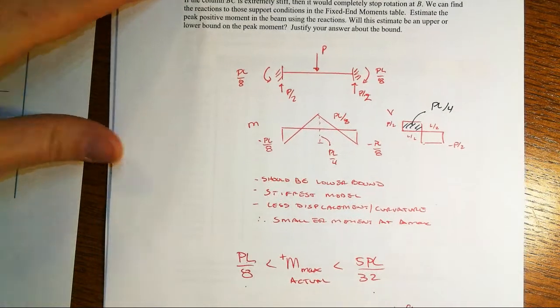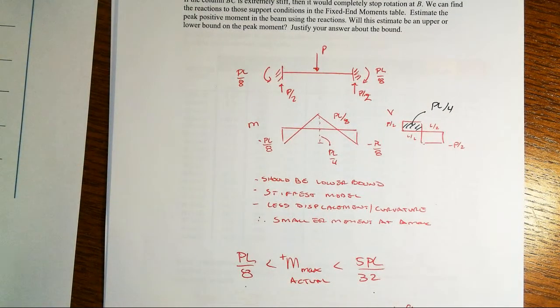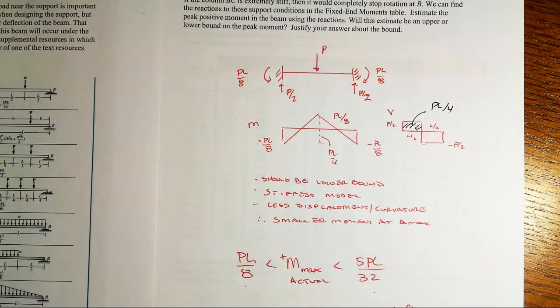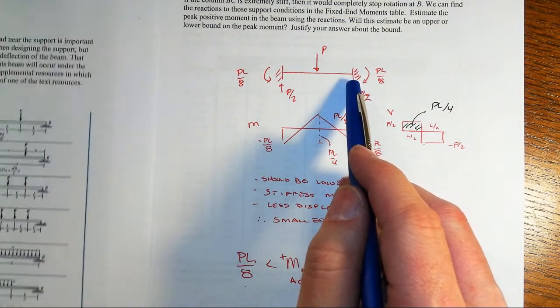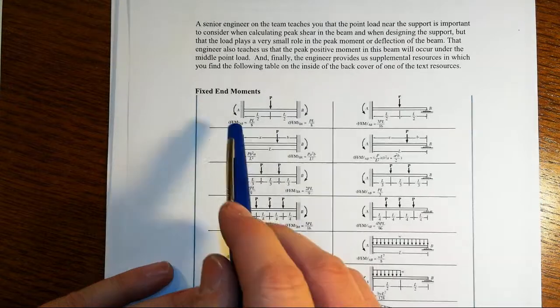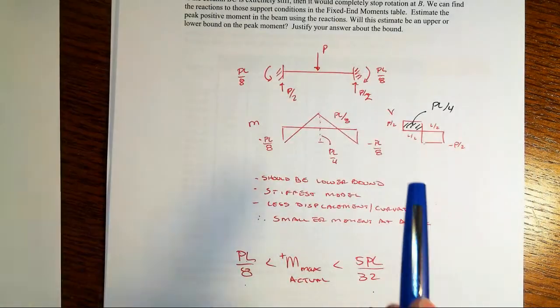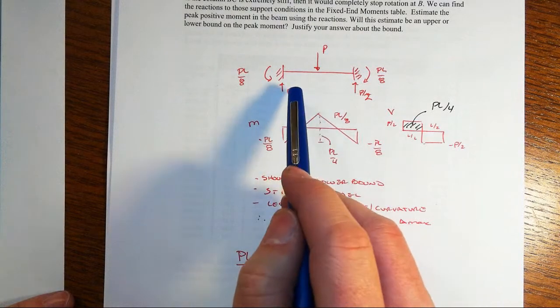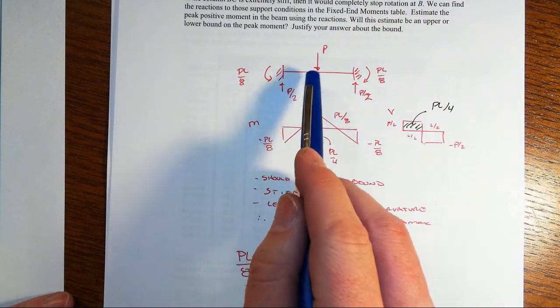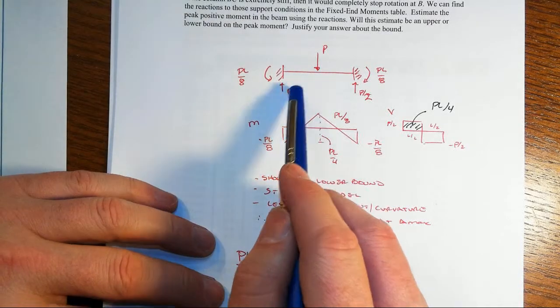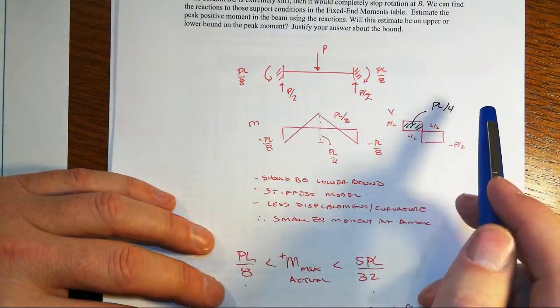Now that other extreme case where now we look at the column being so stiff compared to the beam that it prevents any rotation now at that particular joint. Right now we're fixed-fixed. We look at our table, PL over 8 at both ends, both frowny face. We've got a symmetric situation, so of course it's going to turn out that the applied point load will go to half and half.